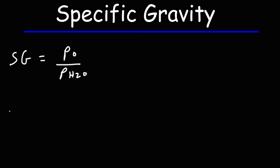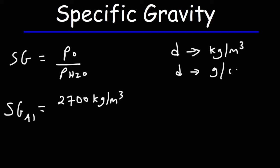For instance, let's say we want to calculate the specific gravity of aluminum. The density of aluminum, if you look it up, is 2700 kilograms per cubic meter. In physics, typically you'll see density in terms of kilograms per cubic meter, but in chemistry density is usually described as grams per centimeter cubed.